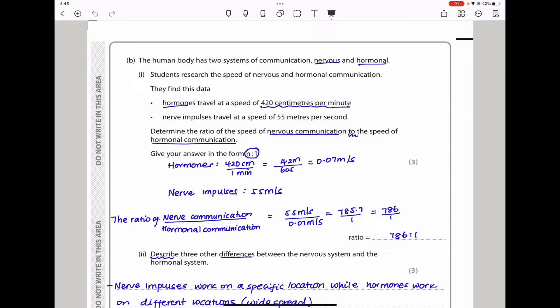The human body has two systems of communication - nervous and hormonal. Students research the speed of nervous and hormonal communication. Hormones travel at a speed of 420 centimeters per minute. Nerve impulses travel at a speed of 55 meters per second. Determine the ratio of the speed of nervous communication to the speed of hormonal communication. I converted 420 centimeters per minute to 4.2 meters divided by 60 seconds, which equals 0.07 meters per second.